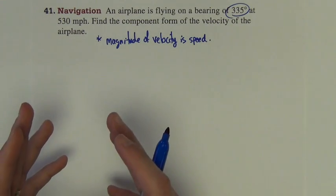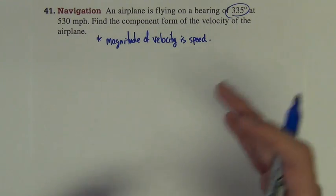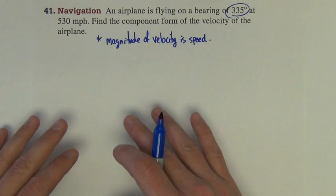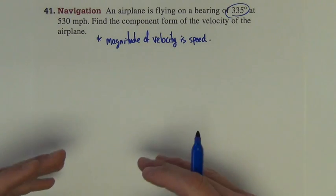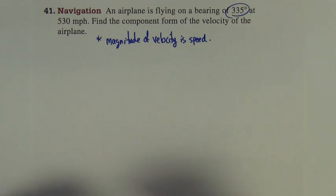Velocity has two pieces of information: what direction it's going and how fast it's going. Speed is just how fast you're going. That's what we define magnitude to be for velocity. It is therefore just speed.